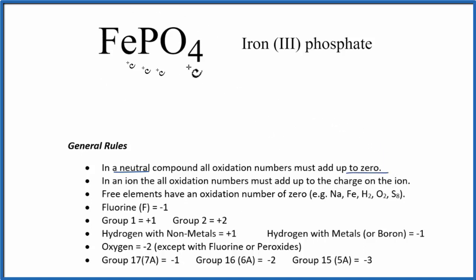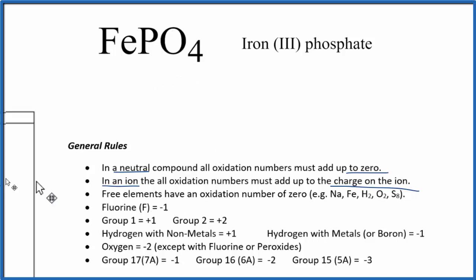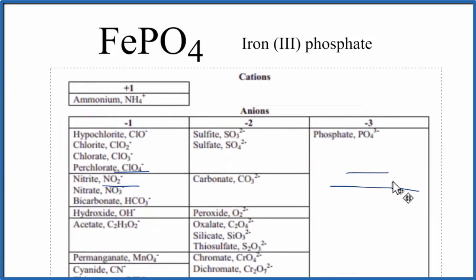The next thing to note is that we have iron, which can have variable oxidation states, and then we have this PO₄, which is a phosphate. When we have an ion, all the oxidation numbers for the ion add up to its charge. So we need to know the charge on the phosphate ion — you could have memorized that it's 3-, or you can look it up on a table.